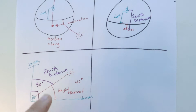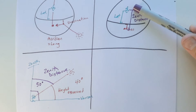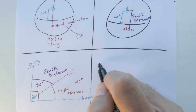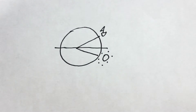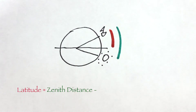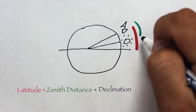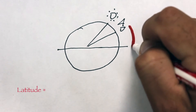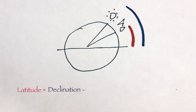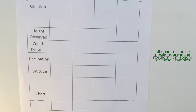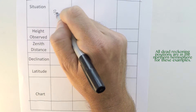For instance, if your height observed was 40 degrees above the horizon, then the zenith distance is 50 degrees — 90 minus the height observed equals zenith distance. You can then use zenith distance plus declination to obtain your latitude. You'll end up in one of three cases: latitude equals zenith distance plus declination; or latitude equals zenith distance plus declination in a different orientation; or latitude equals declination minus zenith distance. It depends on your ship's dead reckoning position relative to the Sun's declination.